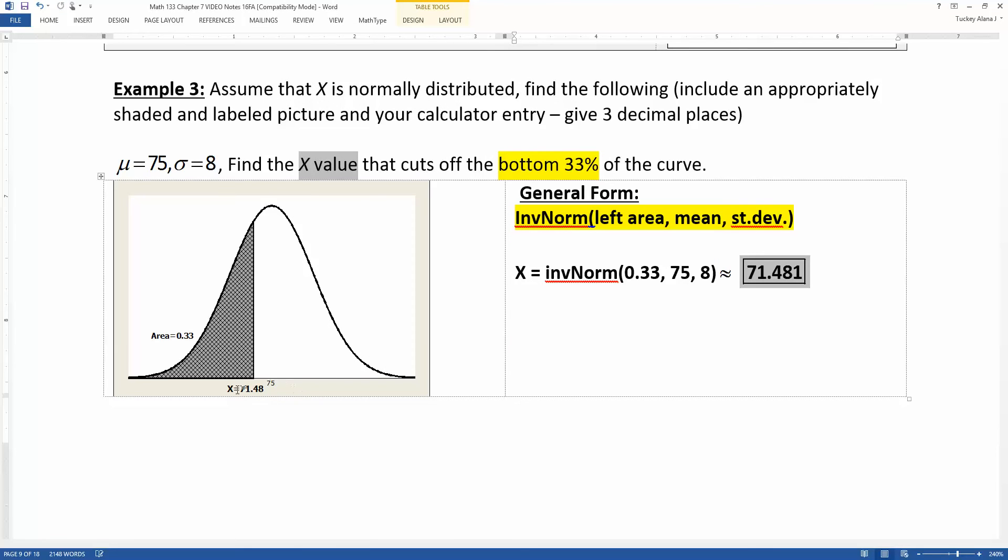And there you can see, I did not lead you astray when I first drew this in here. So the bottom 33% is actually quite a bit of the curve. You're actually pretty close to the mean. The mean is 50%. And I know it doesn't seem like it, but that small bit between 71 and 75 has about 17% of the graph in it. It's quite a large swath.